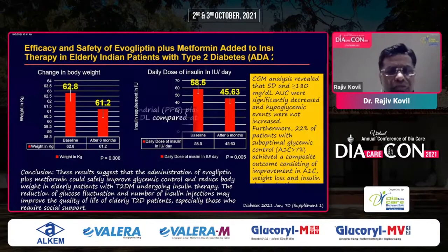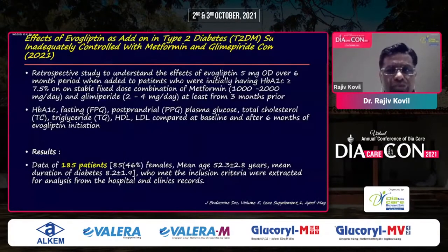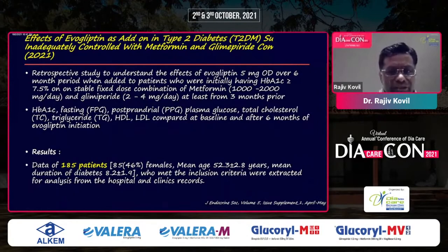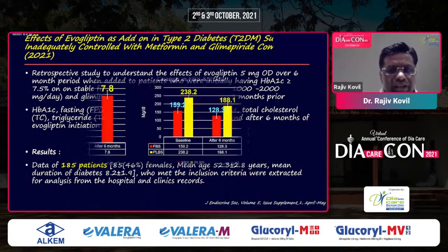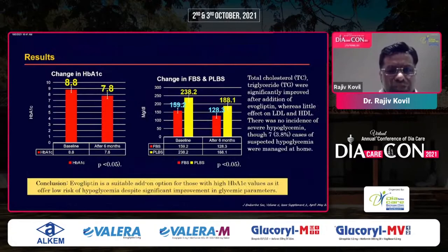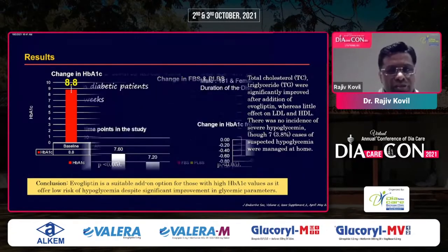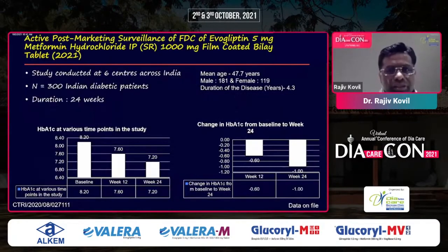Looking at the effects of adding evogliptin in inadequately controlled patients on a metformin-glimepiride combination, presented at the ADA, with 185 patients: adding evogliptin as a third drug showed significant reductions at 24 weeks in both fasting blood glucose and HbA1c at the end of six months of treatment.